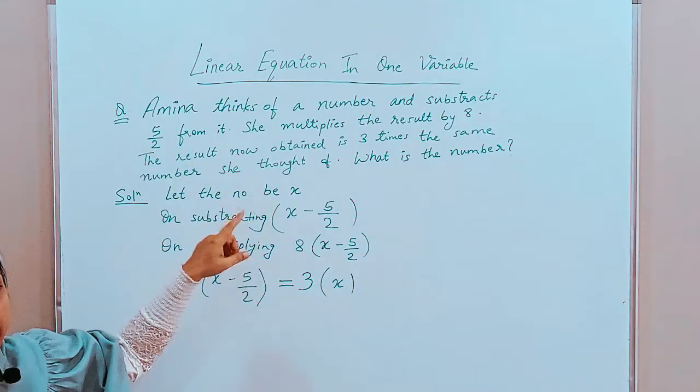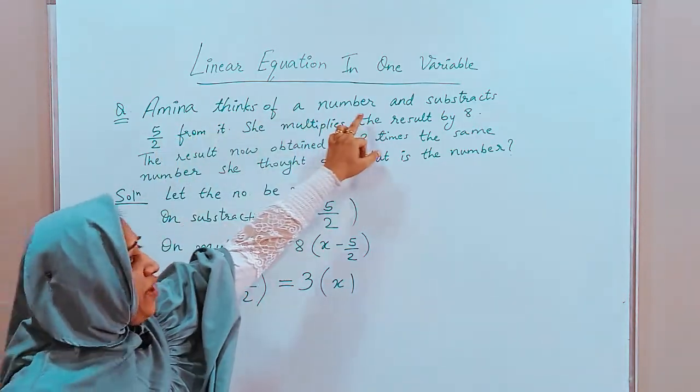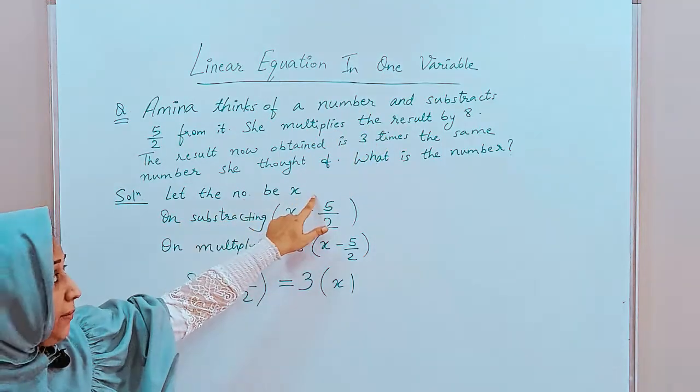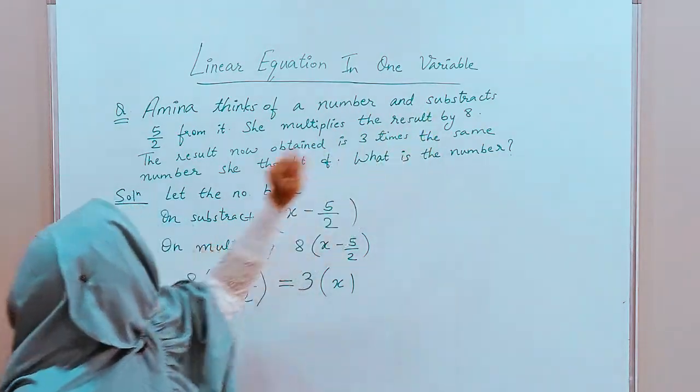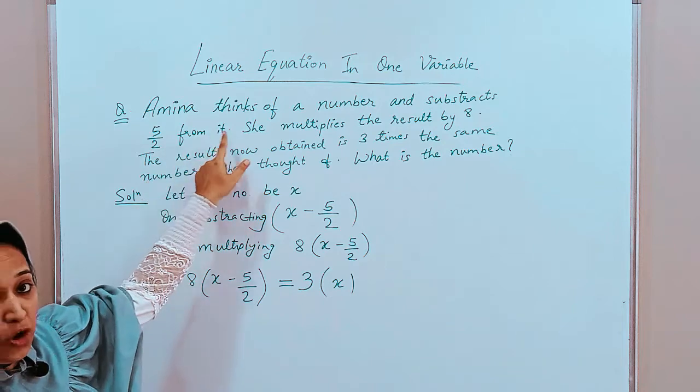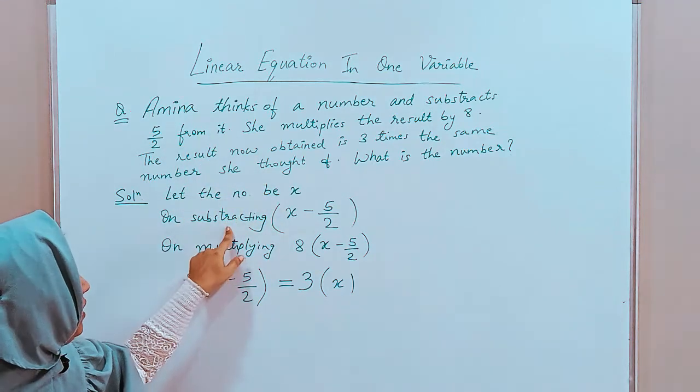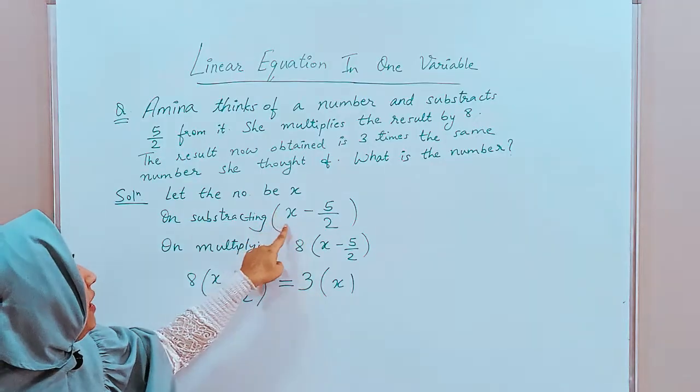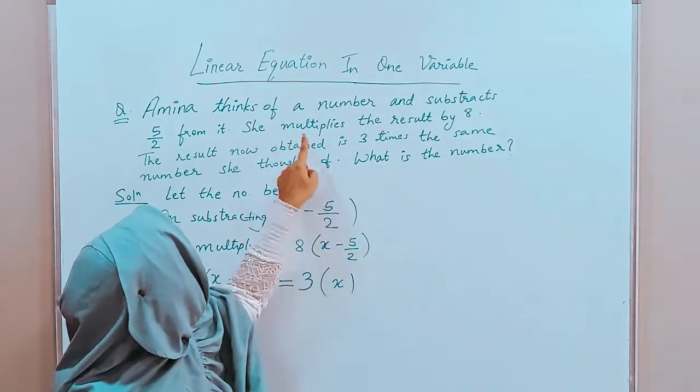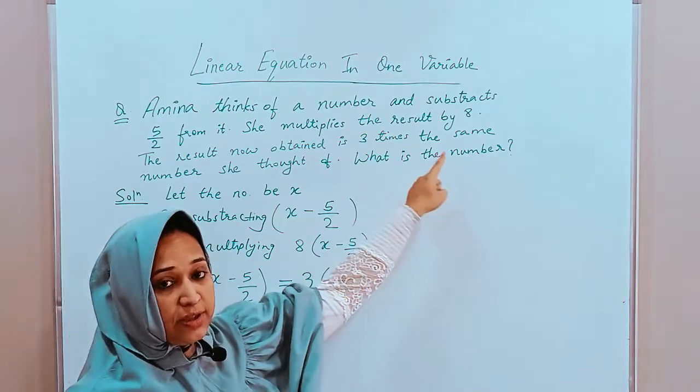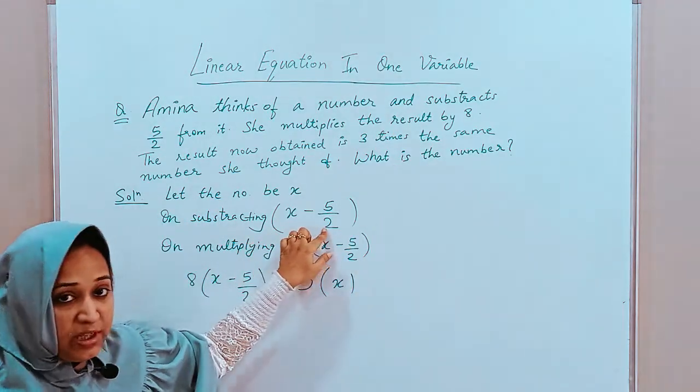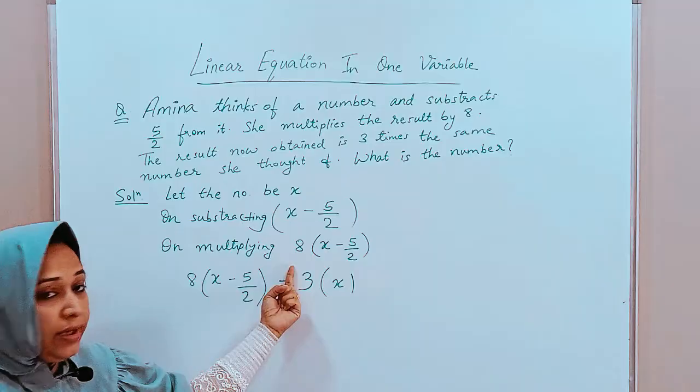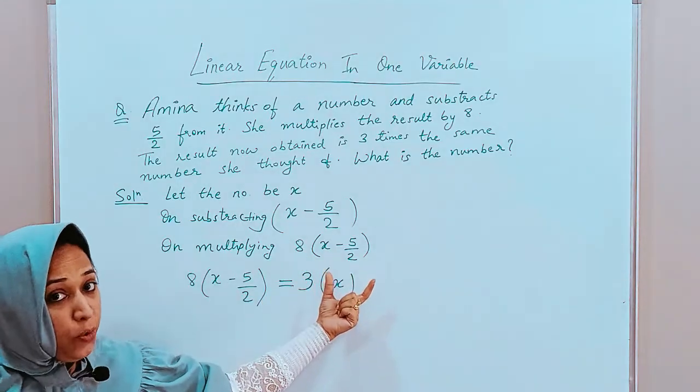Let us do this again. Amina thinks of a number. So, we said, let the number be x. Then, subtract 5 by 2 from it. So, on subtracting 5 by 2 from x, it becomes x minus 5 by 2. She multiplies the result by 8. This is the result x minus 5 by 2. It is multiplied by 8. So, a bracket is very important.